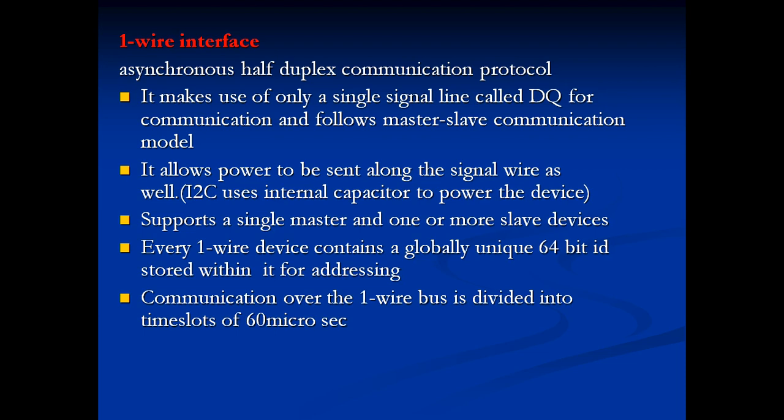One-Wire interface is also known as an asynchronous half-duplex communication protocol. It makes use of only one single line called DQ for communication and follows the master-slave communication model. It allows power to be sent along the signal line — both power and signals travel on the same wire. It supports a single master and one or more slave devices.